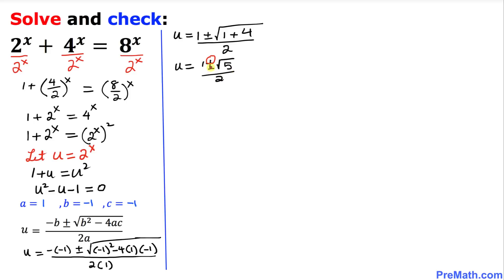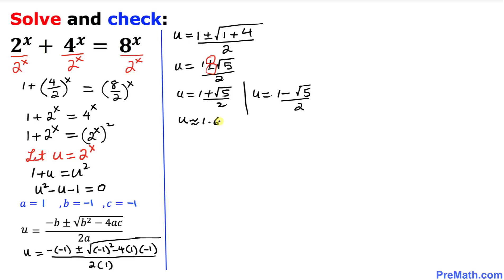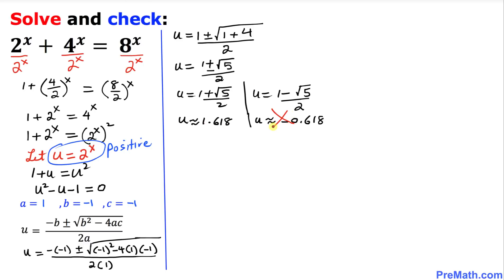Now let's go ahead and split the positive and negative signs. So we can write u equals to 1 plus square root of 5 divided by 2, and the other value is u equals to 1 minus square root of 5 divided by 2. In decimal form this gives us approximately 1.618 and approximately negative 0.618. Since u equals 2 power x, the u value must always be positive, so we are going to eliminate the negative value and accept u approximately equal to 1.618.